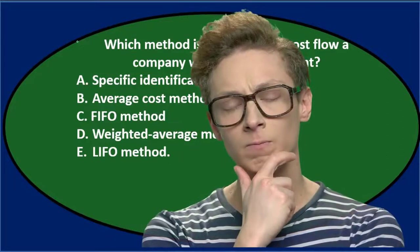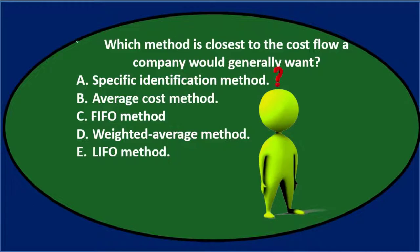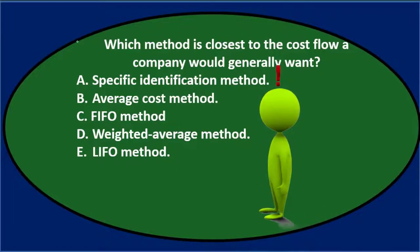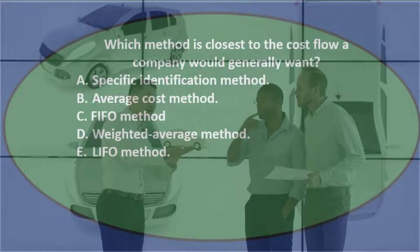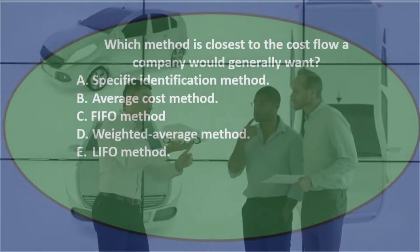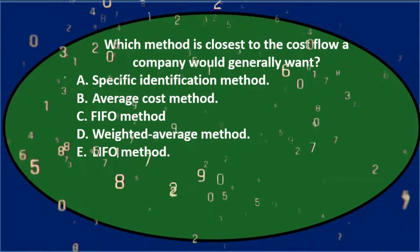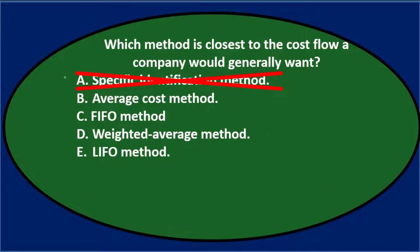When we think about these cost flow methods, most of them are assumptions — not the actual flow. So we can think about which flow method a company would desire to mirror what they hope the physical flow actually is. The specific identification method really isn't an assumption method; it specifically identifies the inventory sold. That would be used for large or custom inventory like cars or forklifts with serial numbers. So I don't think it's going to be A.